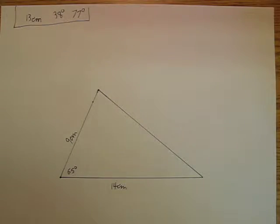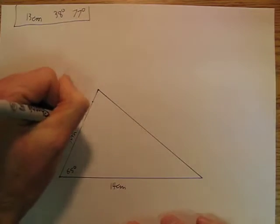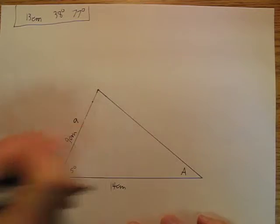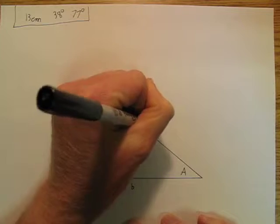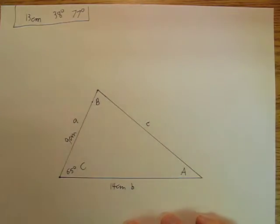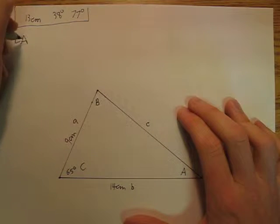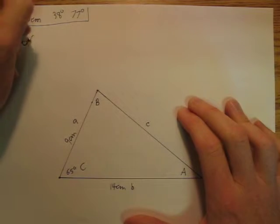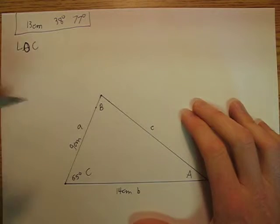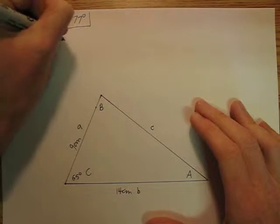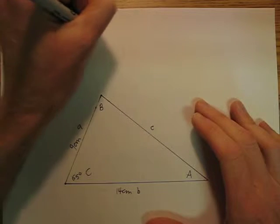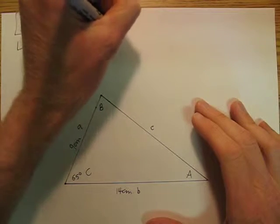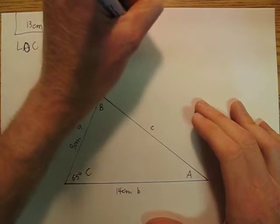Okay. So I don't care which is A, I don't care which is B, which is C. I'm going to call this A, which makes that big A. I'm going to call this little b, which makes that big B. I'm going to call this little c, which makes that big C. And now, my law of cosines is going to be c squared is equal to a squared plus b squared minus 2ab cosine C.